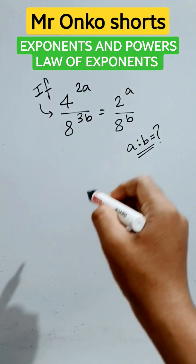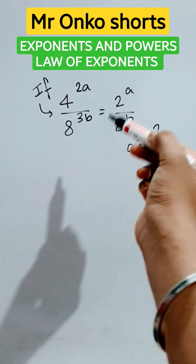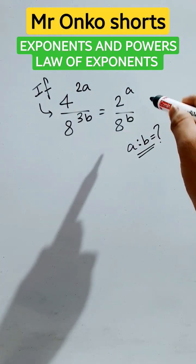Hello guys, welcome to Mr. Longo Shorts. Today, we are given an exponential equation with two distinct variables a and b, and we have to find what a is to b.